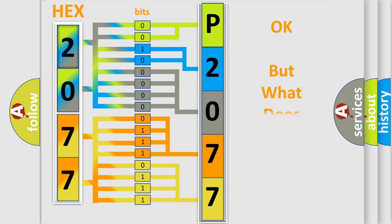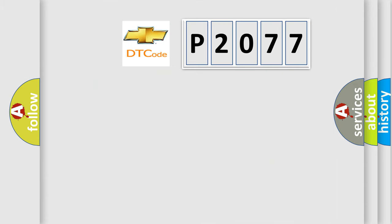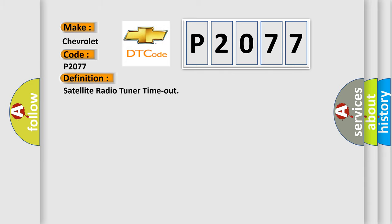We now know in what way the diagnostic tool translates the received information into a more comprehensible format. The number itself does not make sense to us if we cannot assign information about what it actually expresses. So, what does the Diagnostic Trouble Code P2077 interpret specifically for Chevrolet car manufacturers? The basic definition is: Satellite radio tuner timeout.